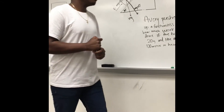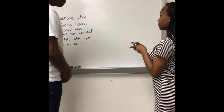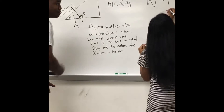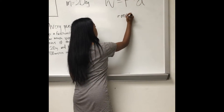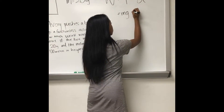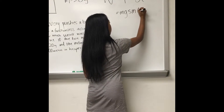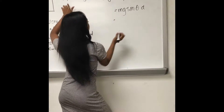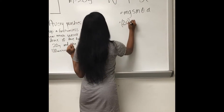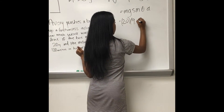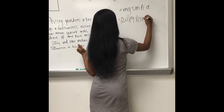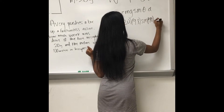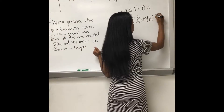Now Maya, go ahead and calculate the work. It's going to be mg·sine(θ)·d. Correct. So our m is 20, our g is 9.8, our angle θ is 40 degrees, and our distance is 100 meters.